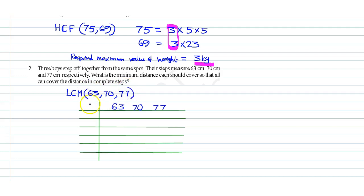We proceed as follows. We divide by 2 first. Since 63 is not divisible by 2, we write it as it is, that is 63 here. 70 by 2 is 35. 77 is written as it is.